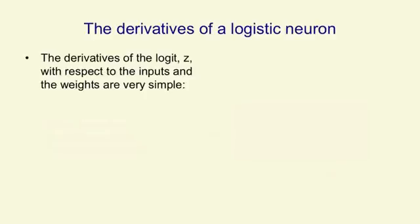So to get the derivatives of a logistic neuron with respect to the weights, which is what we need for learning, we first need to compute the derivative of the logit itself, that is the total input, with respect to a weight. That's very simple.